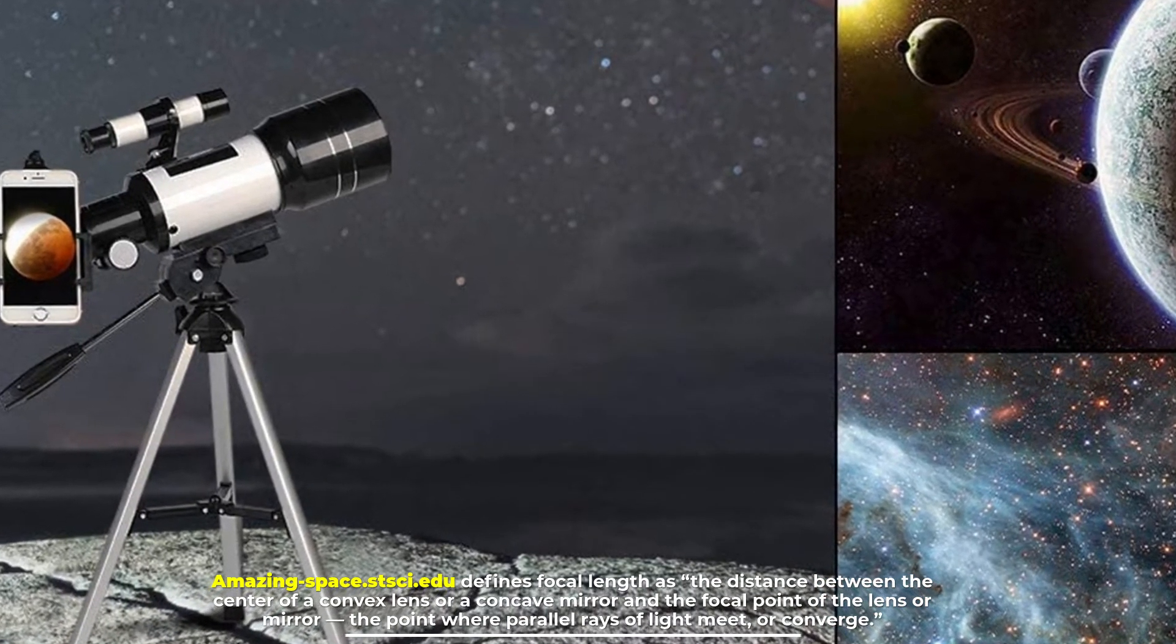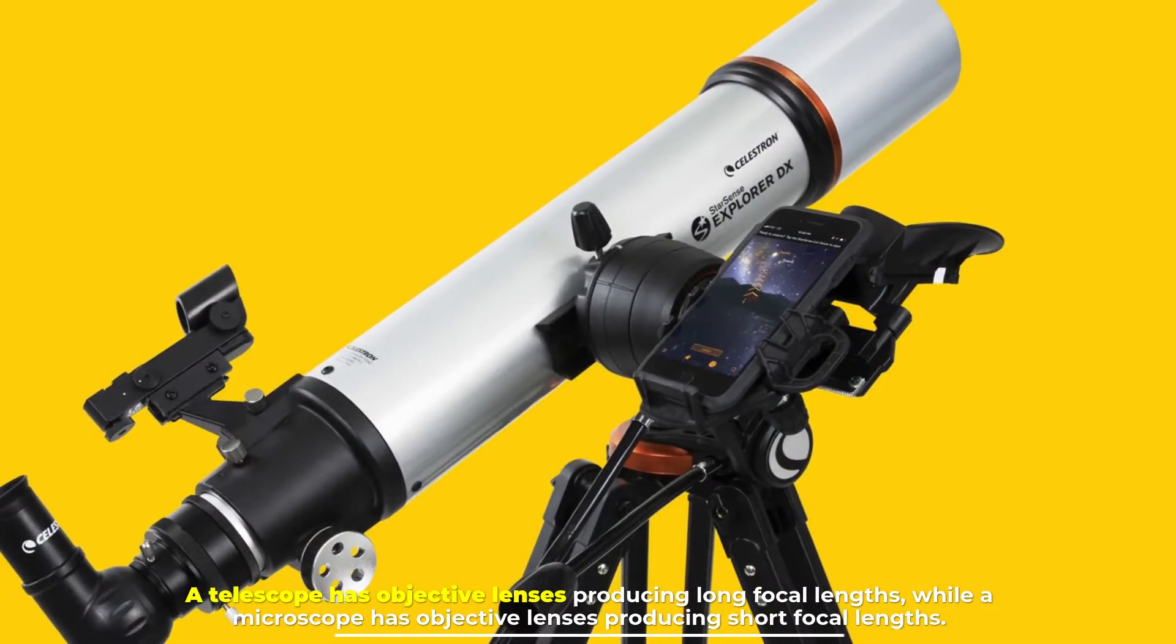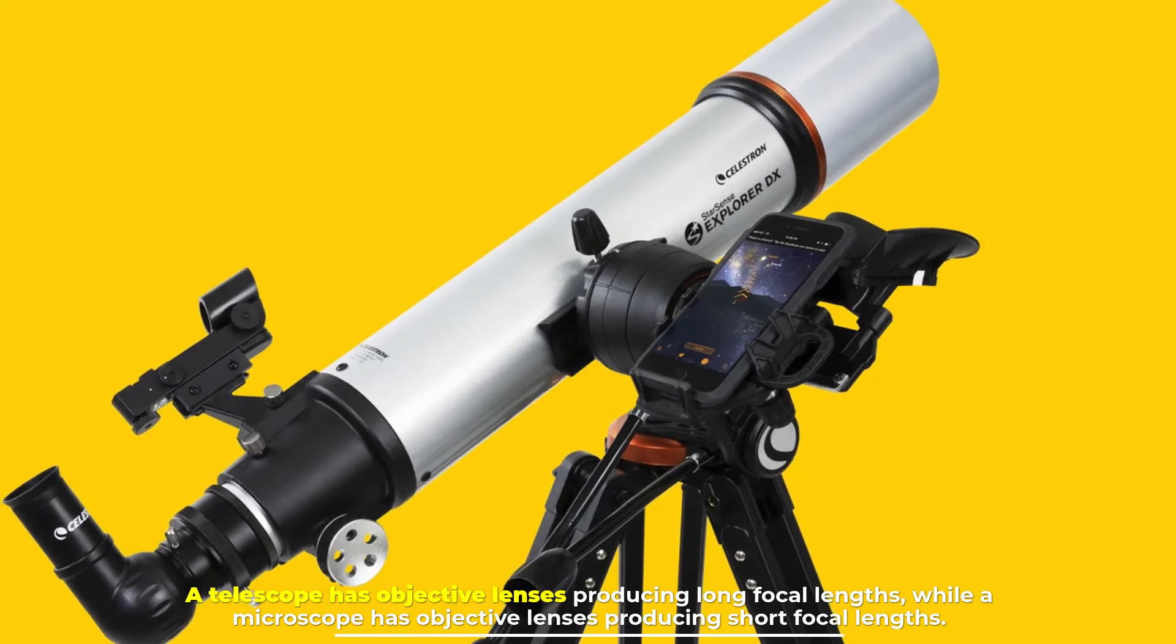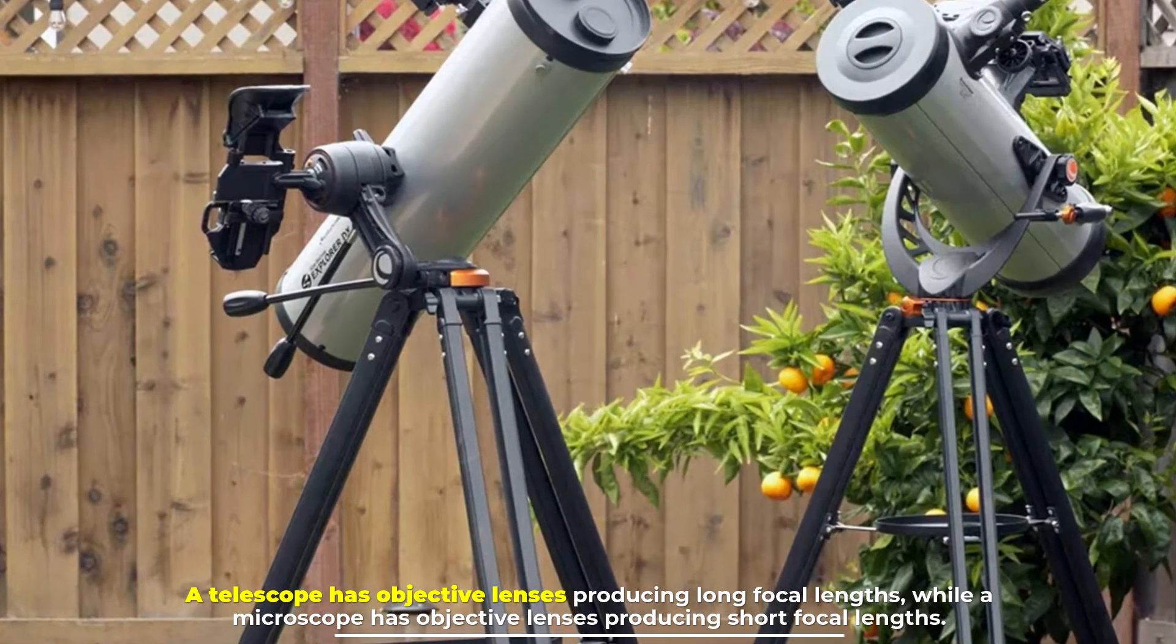A telescope has objective lenses producing long focal lengths while a microscope has objective lenses producing short focal lengths.